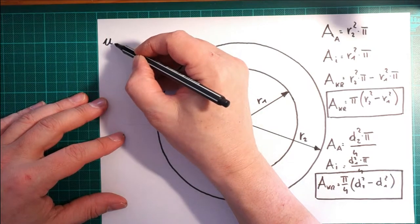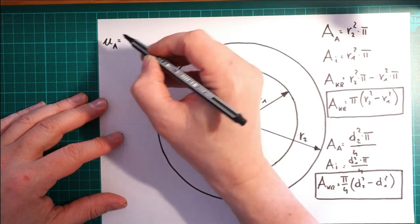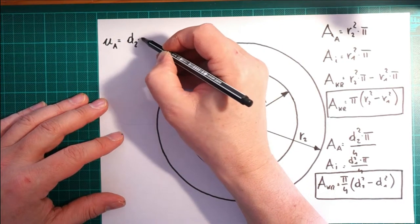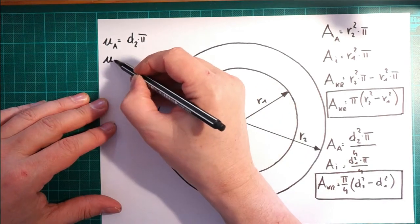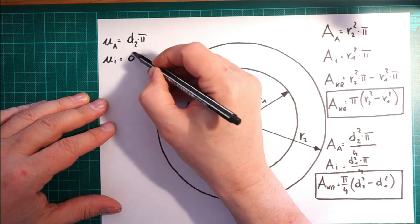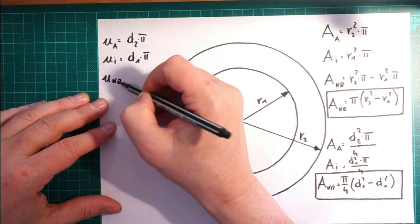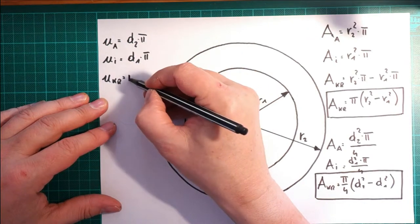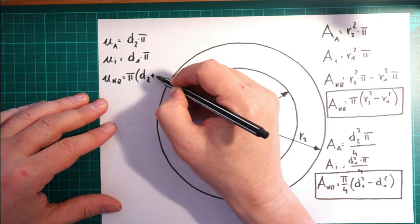Ich muss die zusammenzählen. Der Umfang vom äußeren, also außen, ist d mal Pi. Nein, ich habe es nicht. Der Umfang vom inneren, d mal Pi. Und der Umfang vom Kreisring ist damit. Man kann es jetzt fast schon ahnen, dass ich das Pi wieder da heraushebe. D2 plus D1.